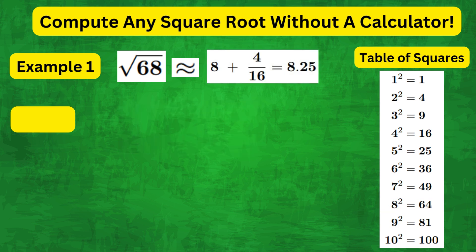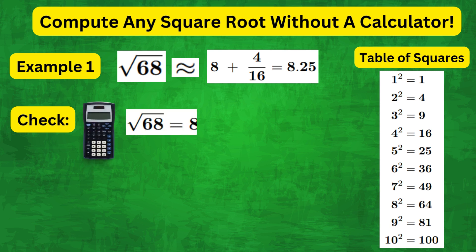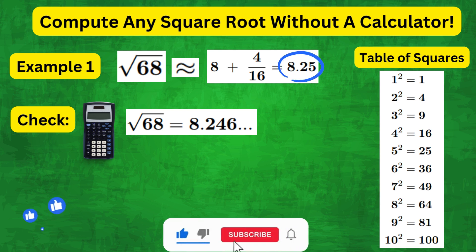Now, let's check how close we are to the actual value. Using a calculator, we get square root of 68 as 8.246. So, our estimate is actually quite accurate.